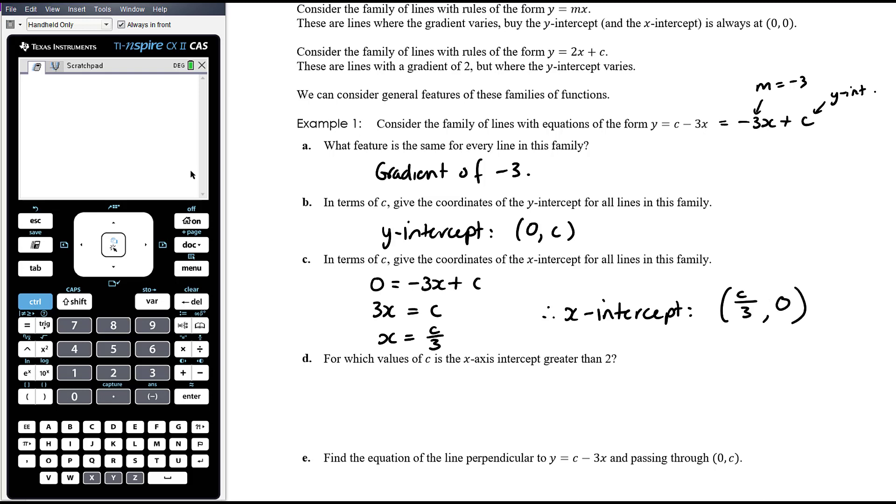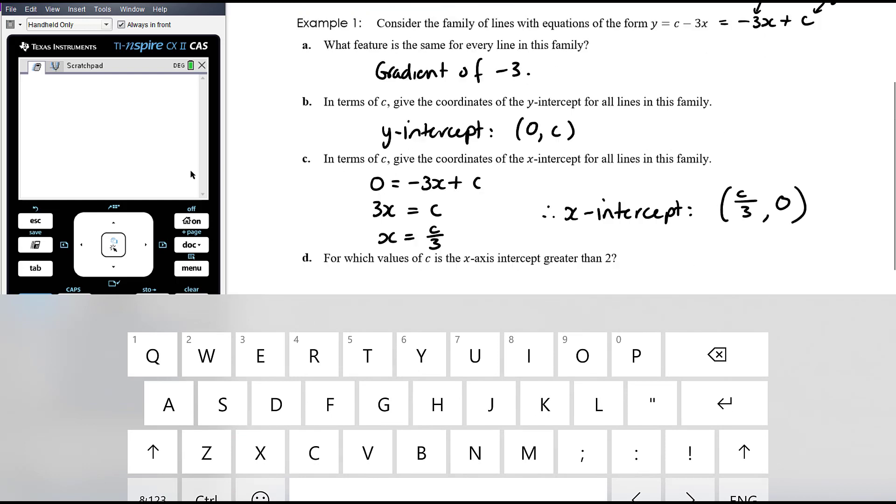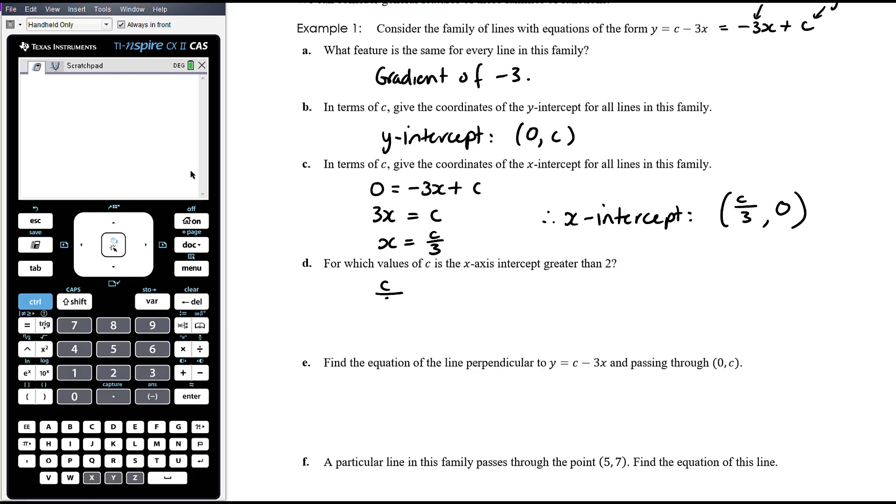For which values of c is the x-axis intercept greater than 2? Well, the x-intercept is c on 3. So we want to know when is c on 3 greater than 2? Solving that inequality, when c is greater than 6. For which values of c is the x-axis intercept greater than 2?